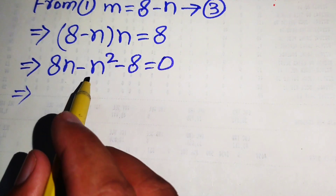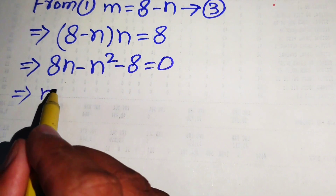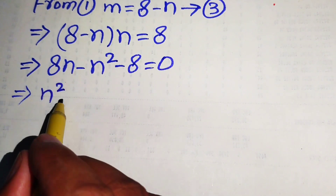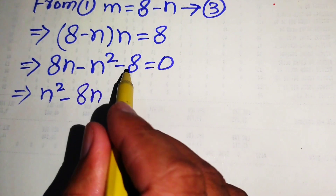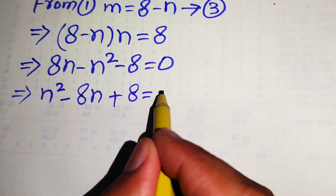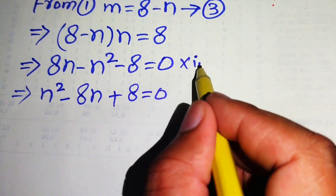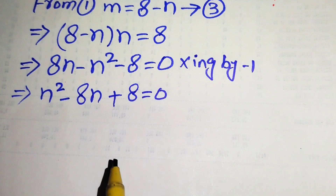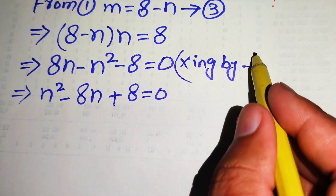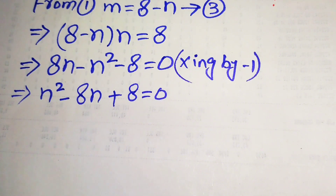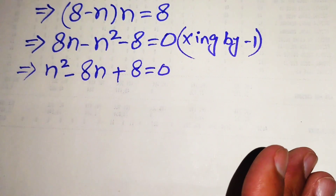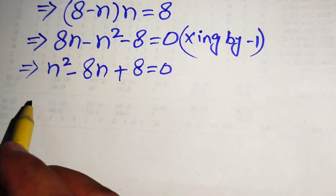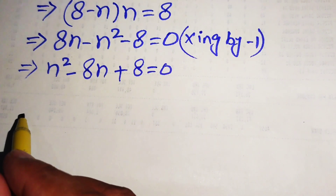We rearrange the terms and multiply each term by minus 1, so the negatives become positive and the positives become negative, giving us n squared minus 8n plus 8 equals 0. After that, we use the quadratic formula to solve this problem.